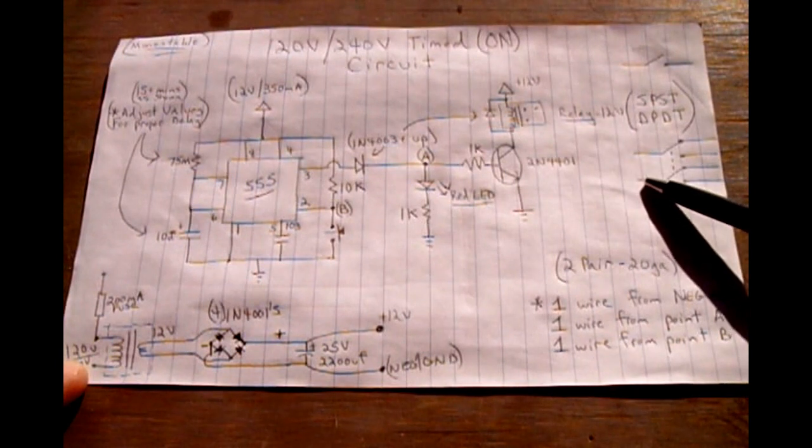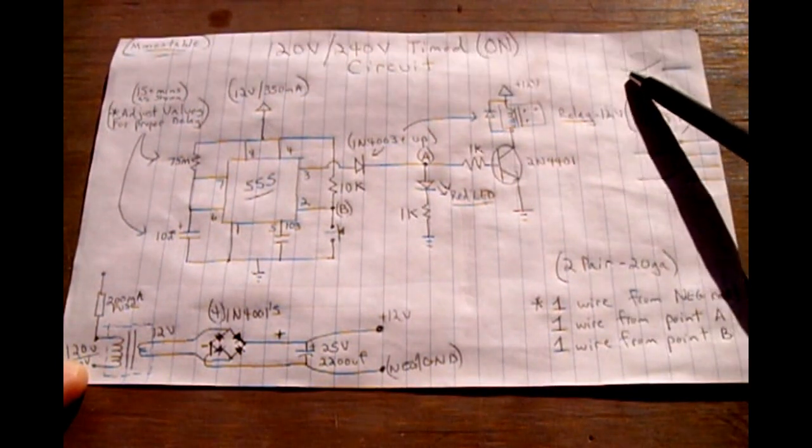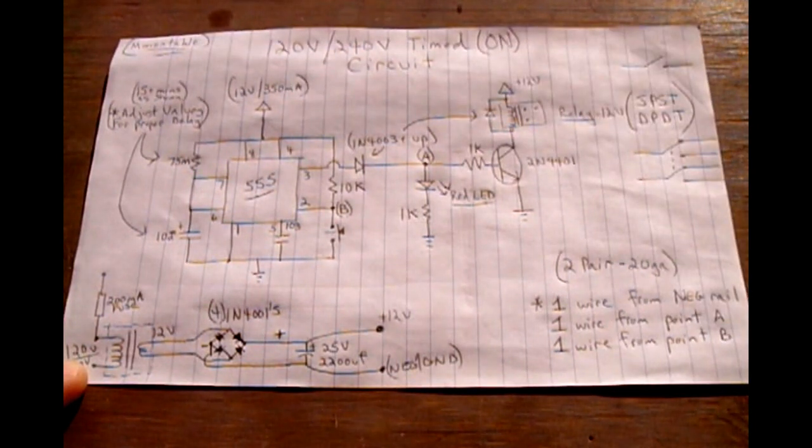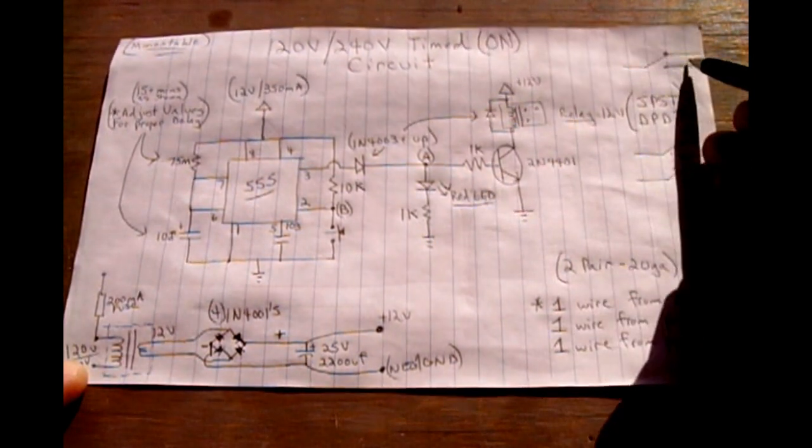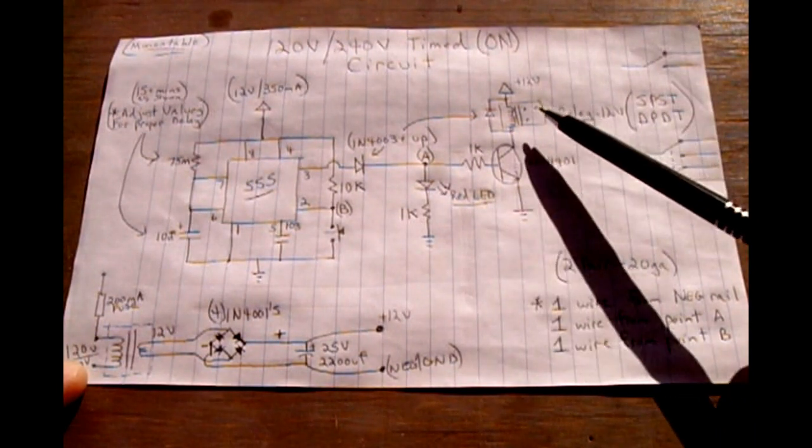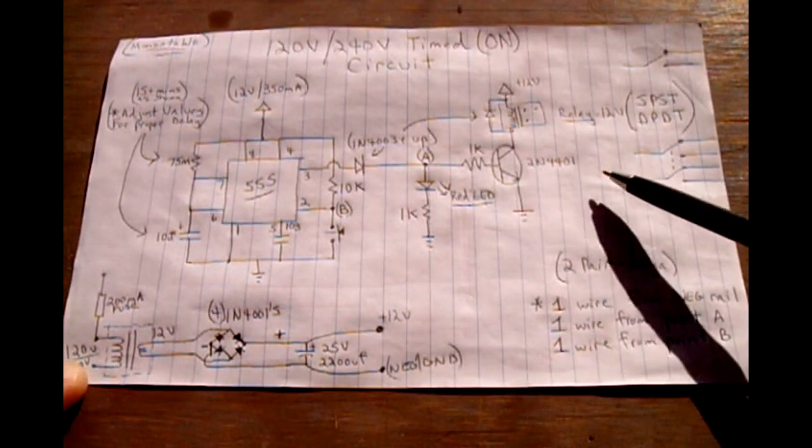You can also use just a single pole, single throw, or you can use a single pole, double throw, which would be another one here going out. And you would have a normally open and normally closed. So just make sure your relay can handle the current and it's got the proper configuration.